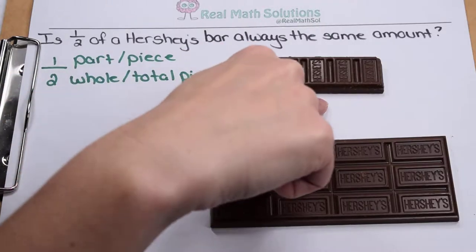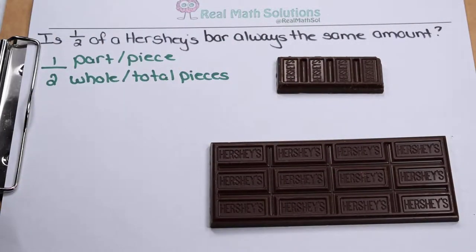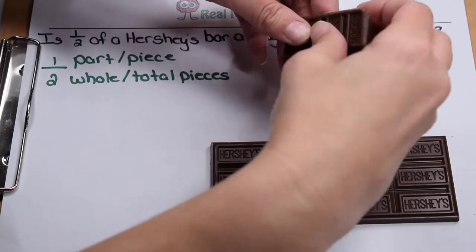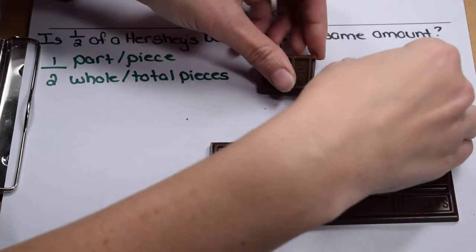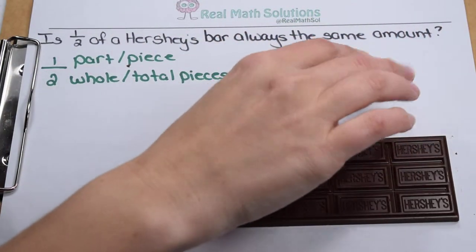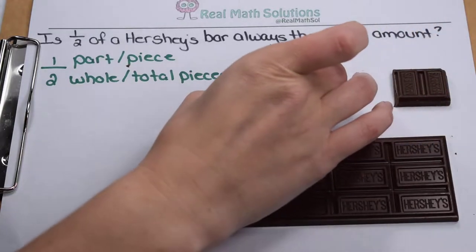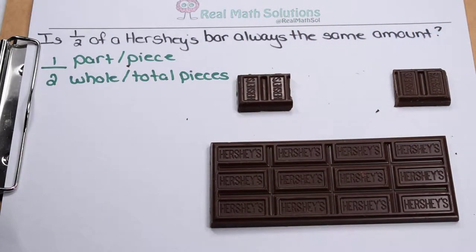So let's start with our small fun-size Hershey bars that a lot of houses will give out. I need to split it into two pieces. When I split it into two pieces, that means I would get to keep this piece and I would have to share that piece.